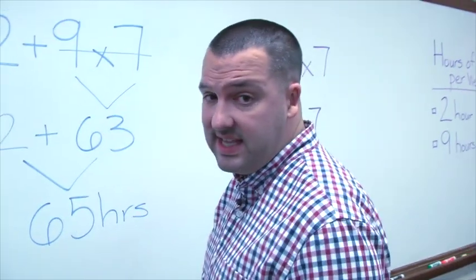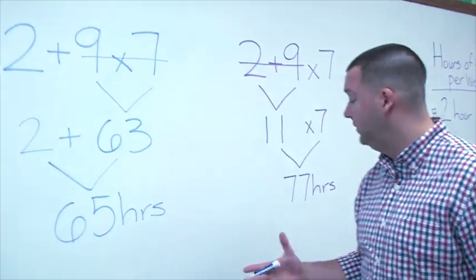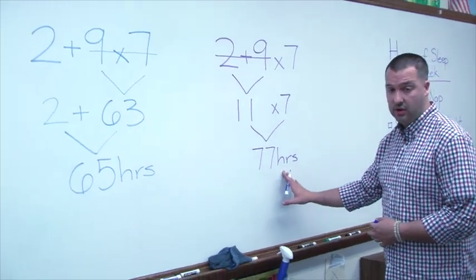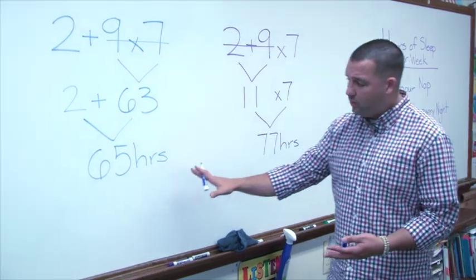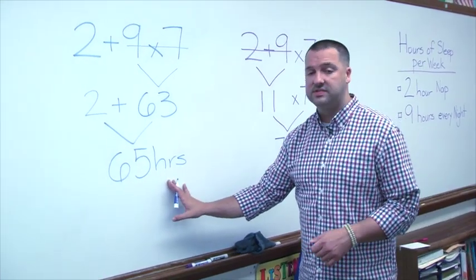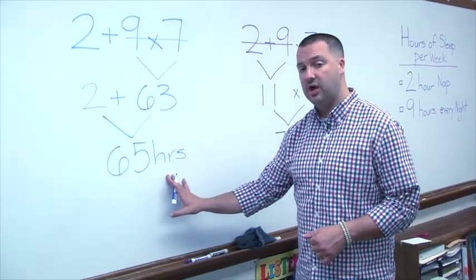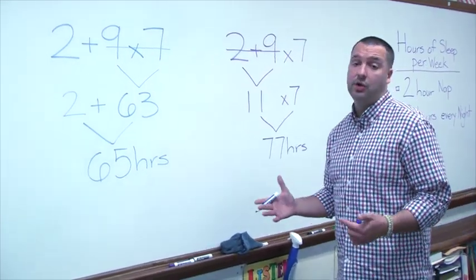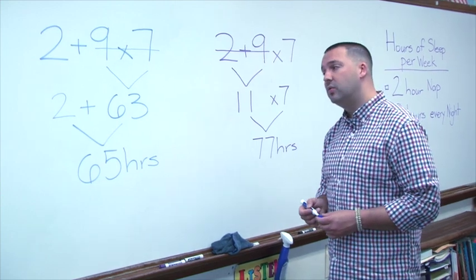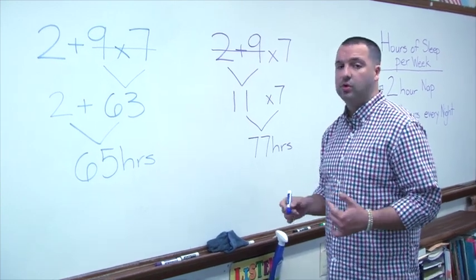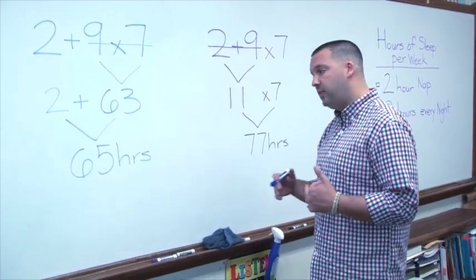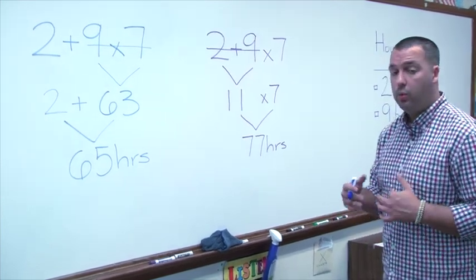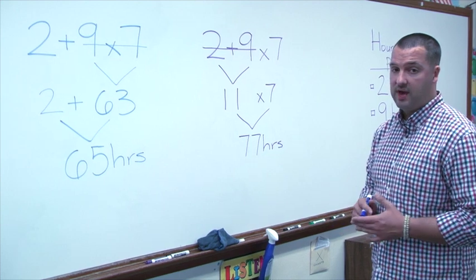So you can see in those two problems: the first way we did it, we got 77 hours of sleep for Joe per week. The second way, we got 65 hours of sleep per week for Joe. We know in math there can usually only be one right answer. So let's look at the order of operations to see which of these problems is correct and which is incorrect.